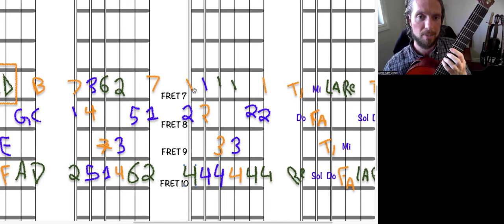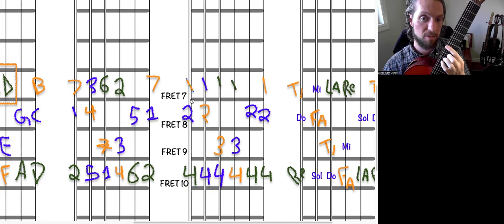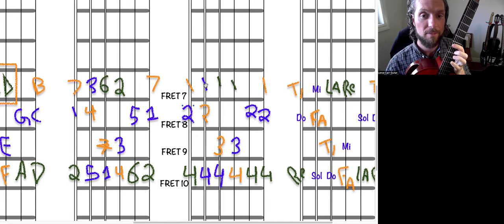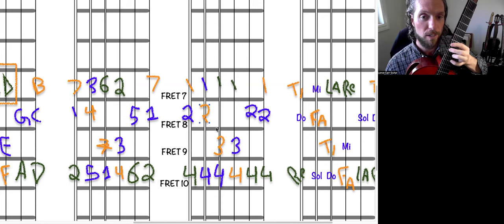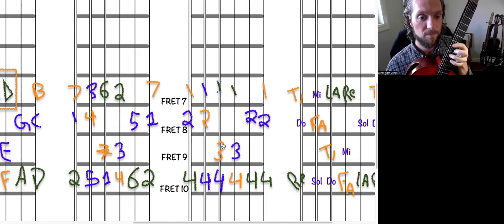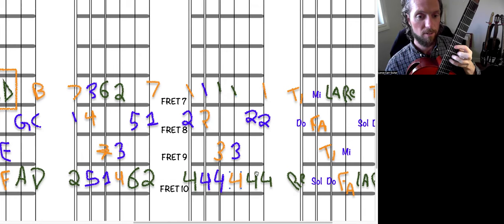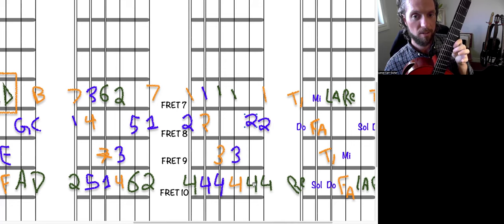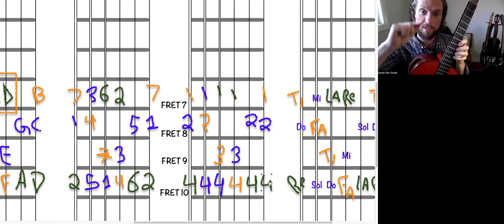Big string fret seven, that's finger one. Fret eight, that's finger two. Fret ten, finger four. String below it, fret seven is finger one, fret eight finger two, fret ten finger four. String below that, finger one, finger three on fret nine, finger four on fret ten. Now we're on string G, the third string of the guitar, finger one, finger three, and finger four. The next string doesn't have a finger that gets played because it's not in the key of C, but we go to finger two on fret eight, finger four. Then the small string finger one, finger two, and finger four.